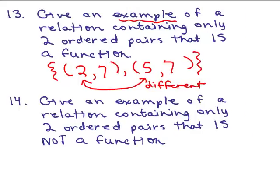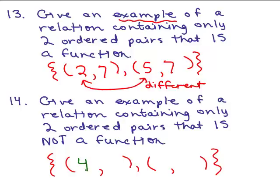For number 14, we're asked to give an example of a relation that is not a function. In this case, make sure the x coordinates are the same. Pick any number — say 4 — and use it for both x coordinates. Then put any numbers you want for the y values, like 1 and 3. There are infinitely many possibilities.